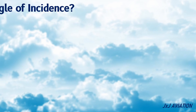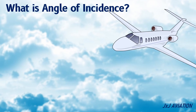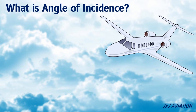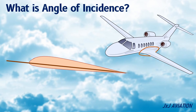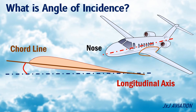What is angle of incidence? In an aircraft, the angle of incidence is defined as the angle between the chord line and the longitudinal axis of the aircraft. The longitudinal axis is a straight line connecting the nose and tail section of an aircraft.